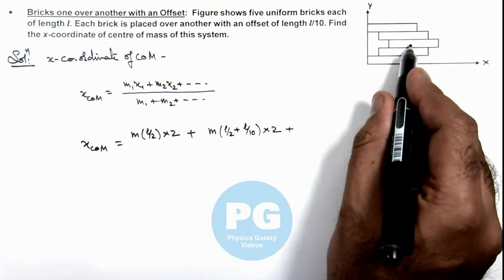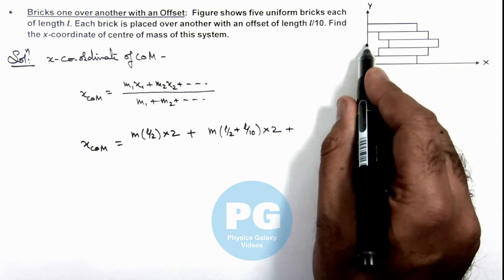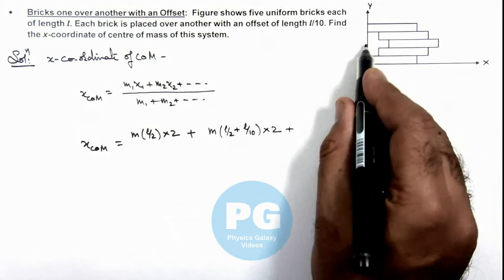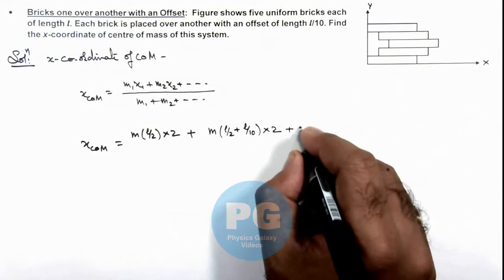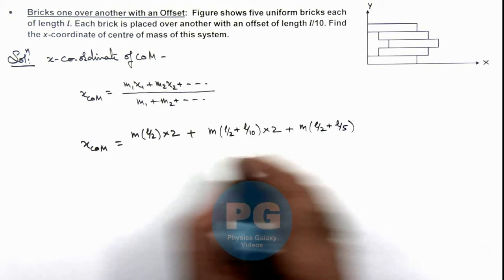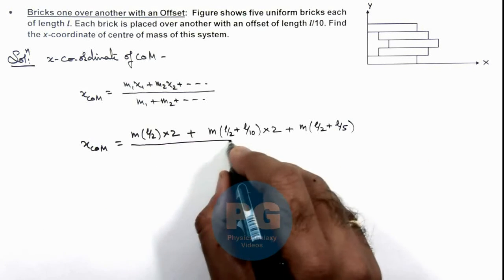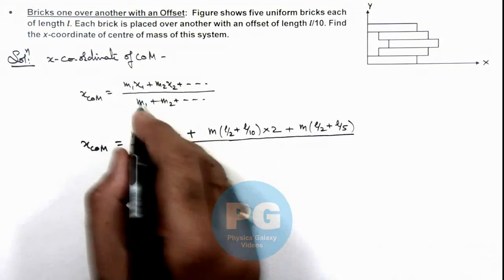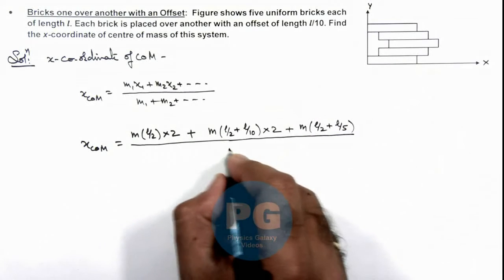Plus for the third brick, the center of mass is at a distance l by 2 plus twice of l by 10. So we write it m multiplied by l by 2 plus l by 5, and whole divided by the sum of all the masses, that is equal to 5m.